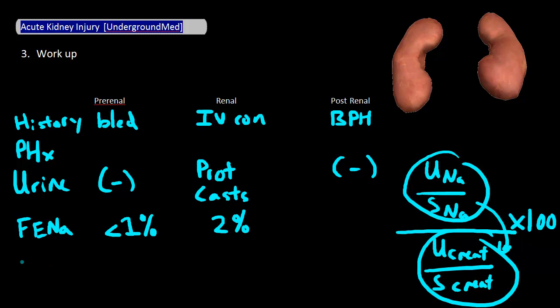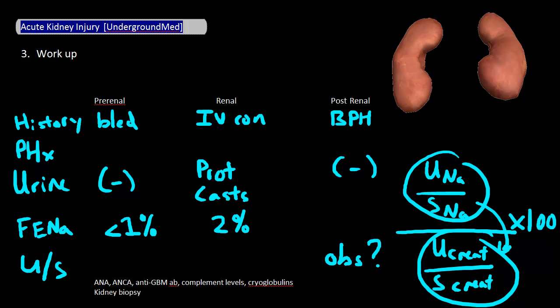You also want to get an ultrasound to look for signs of obstruction. A CT is another option but isn't usually first line. Other common things that might also be indicated include serologies to look for a more specific renal cause, such as ANA, ANCA, anti-GBM, complement levels, or cryoglobulins, or kidney biopsy.